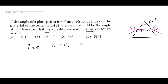The refractive index n is defined as sin i divided by sin r. We also have the relation that r1 plus r2 equals A, the angle of the prism. Since r1 equals r2, we get r equals A divided by 2, which gives r equals 30 degrees.